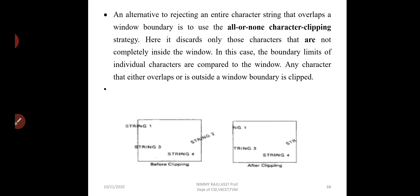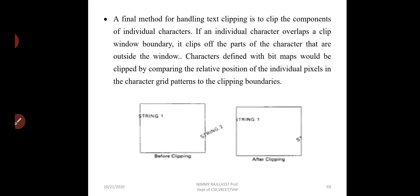So these are the three methods used in text clipping. The first method is all-or-none string clipping: if the whole string is completely inside the clip window, save it; otherwise, clip it. The second method is all-or-none character clipping: individual characters are checked. The third method is component clipping: if a character overlaps, the outside portion is discarded and the inside portion is saved. That covers all the text clipping methods.